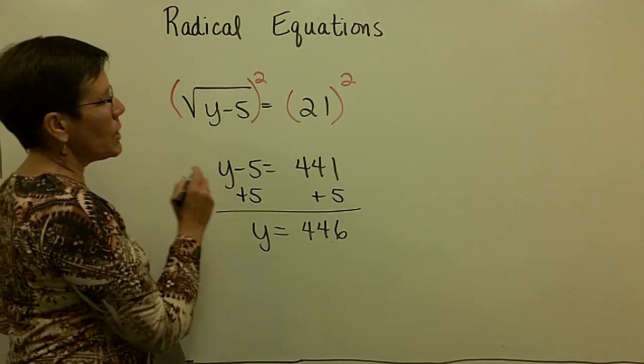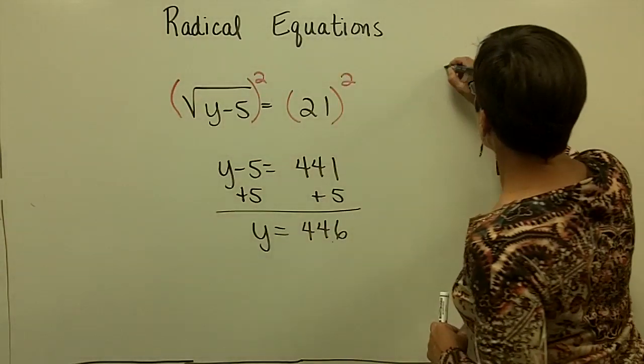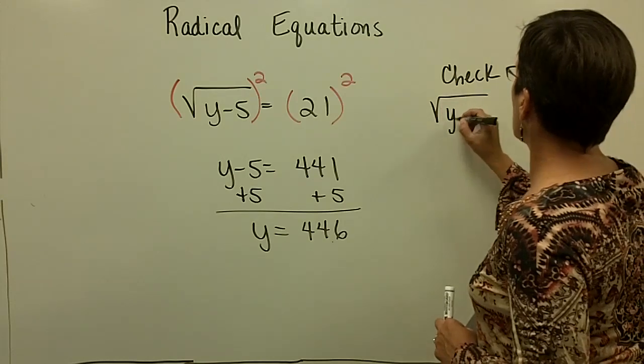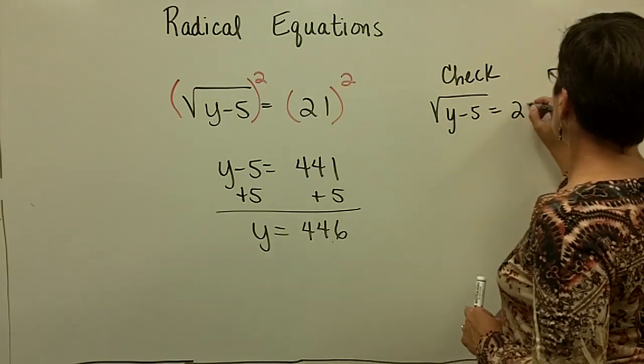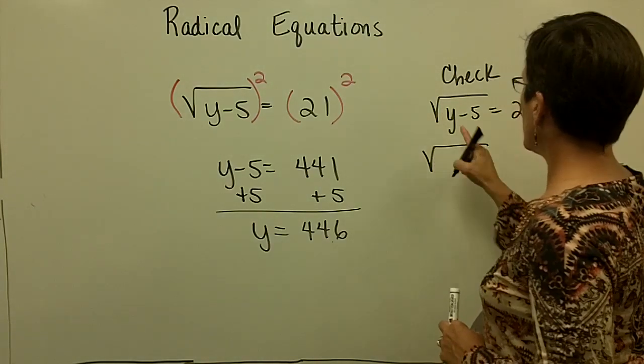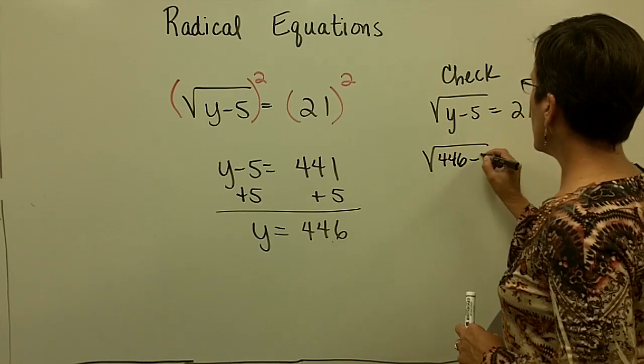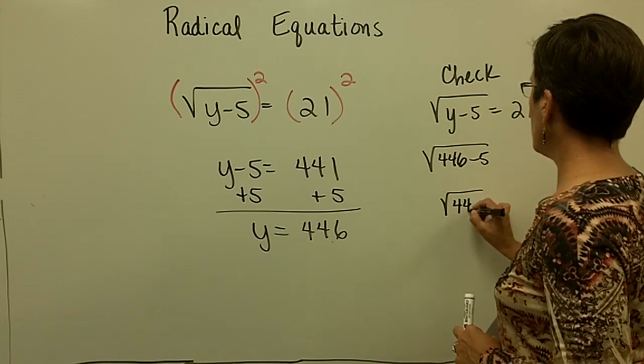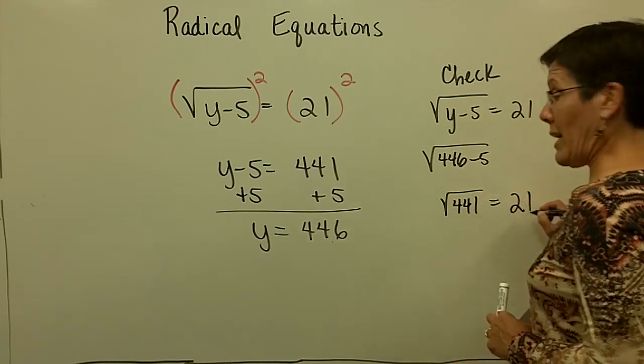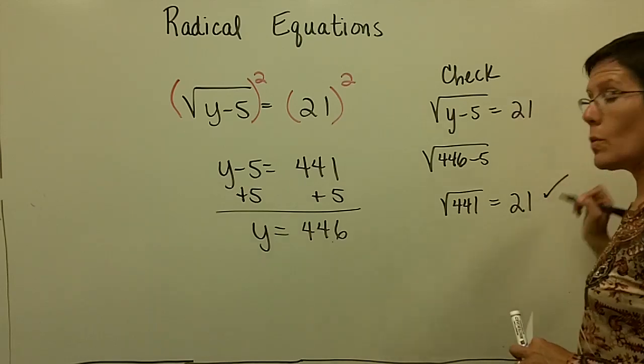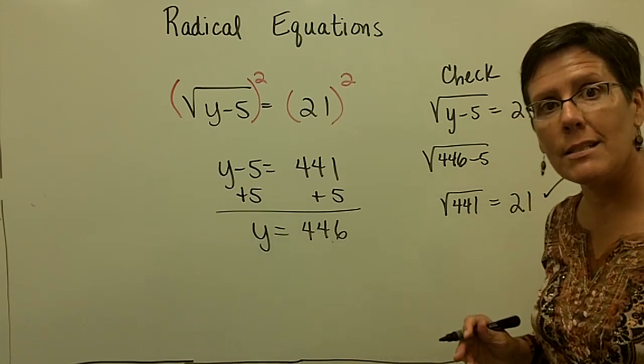I'll take that and put it in my original equation. So let's go ahead and check this. So I have the square root of y minus 5 equals 21. So I'm going to put in for y my value of 446 and subtract 5 from it. And I'll get 441. And I just want to check with my calculator if I need to and see if the square root of 441 is 21. And I'll find out that it is.